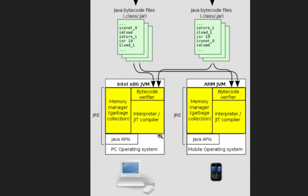These JVMs convert the bytecode into the format which that particular operating system understands. To run a Java program on any system, all you need to do is install the JVM for that particular OS and processor configuration. For example, if you have a Mac PC, you first install a JVM and then you would be able to run the Java program.